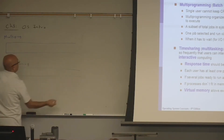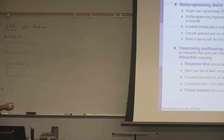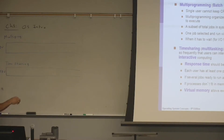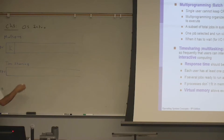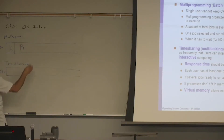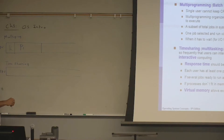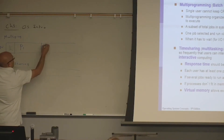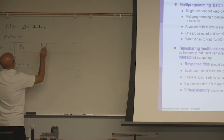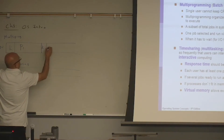These are timing diagrams on the CPU. In the multiprogramming diagram, we have the kernel, then the kernel gives the CPU to process number one. At some point, process number one requests I/O, so the kernel takes control and gives the CPU to process number two.